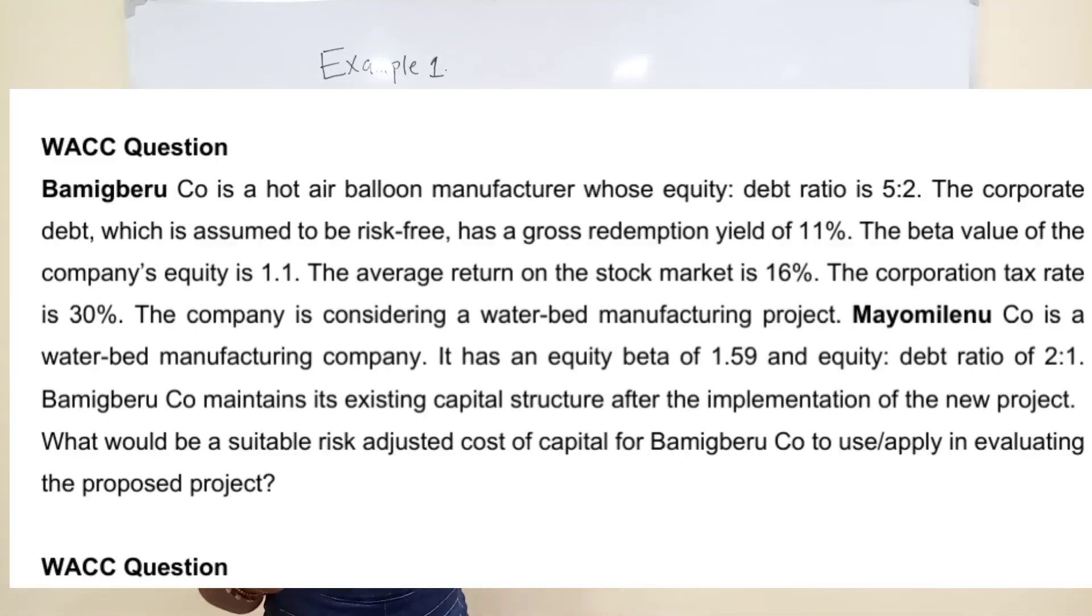Bargain Very Poor is a hot air valve manufacturer whose equity to debt ratio is 5:2. The corporate debt, which is assumed to be risk-free, has a gross redemption yield of 11%. The beta value of the company's equity is 1.1. The average return on stock market is 16%. The corporation tax rate is 30%. The company is considering a waterbed manufacturing project.